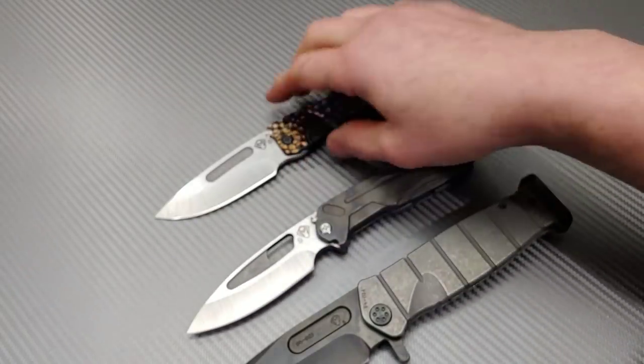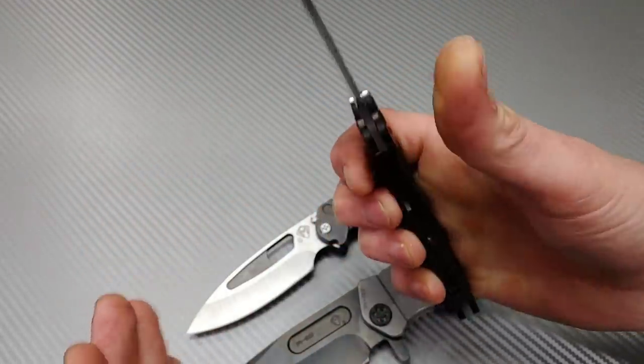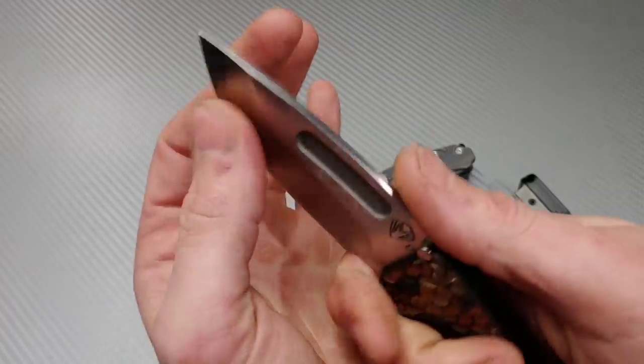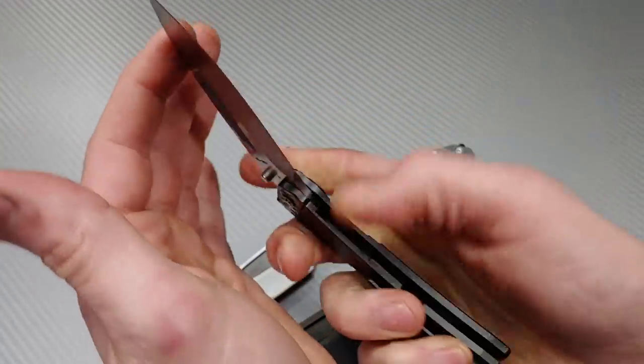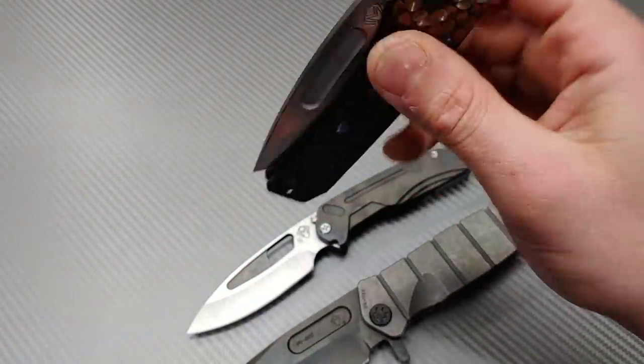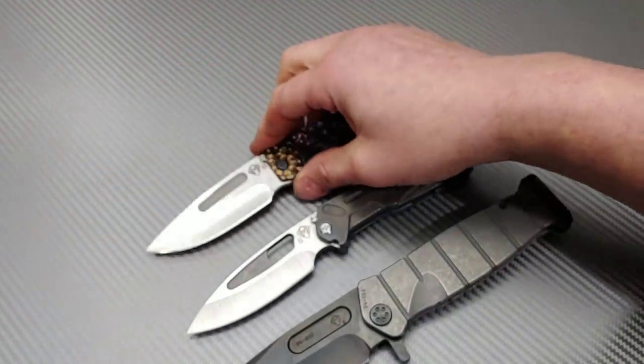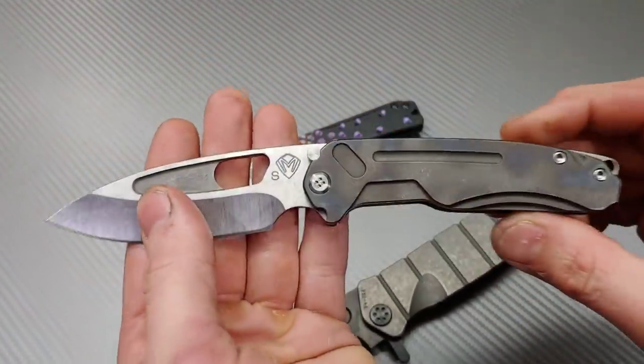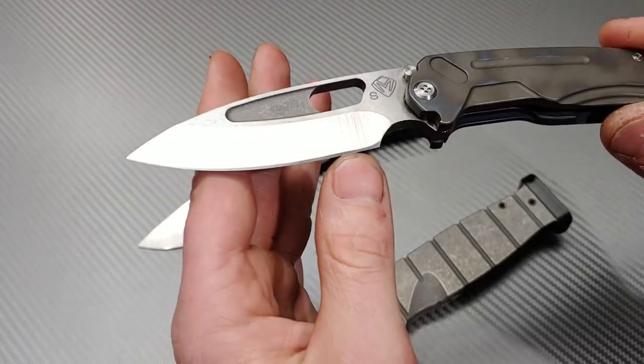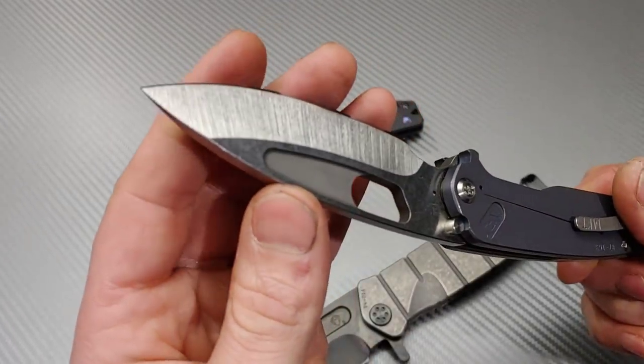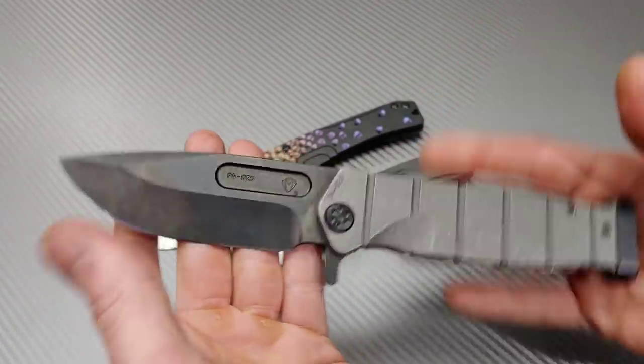All these knives are really extremely well-built. Amazing designs. All three of them have hollow grinds. This one being the thinnest. Extremely thin behind the edge. Nice thin blade stock. Great ergos. It's very slim in the pocket. Unlike a lot of his knives that are really overbuilt. This one I have in for sharpening, but I had to get a video out of it. And then the beast.